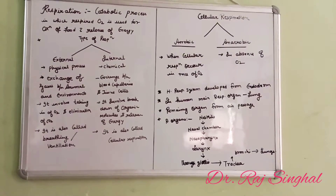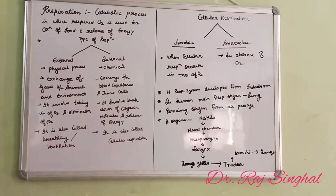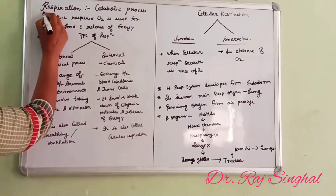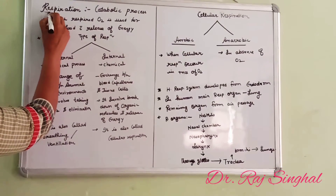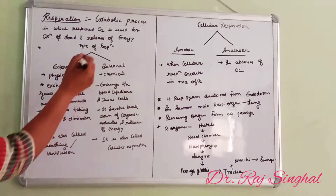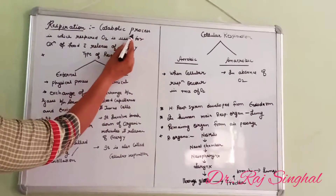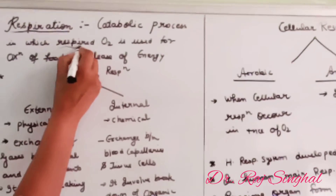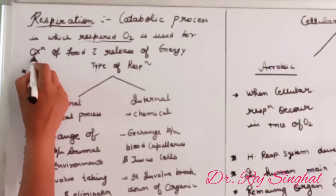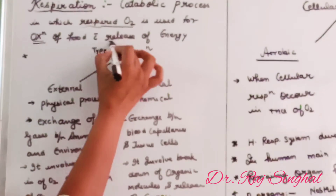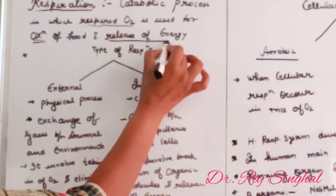Now moving towards our chapter — respiration in human beings. First of all, we will see what is respiration. Respiration is a catabolic process in which the respired oxygen is used for oxidation of food with the release of energy.